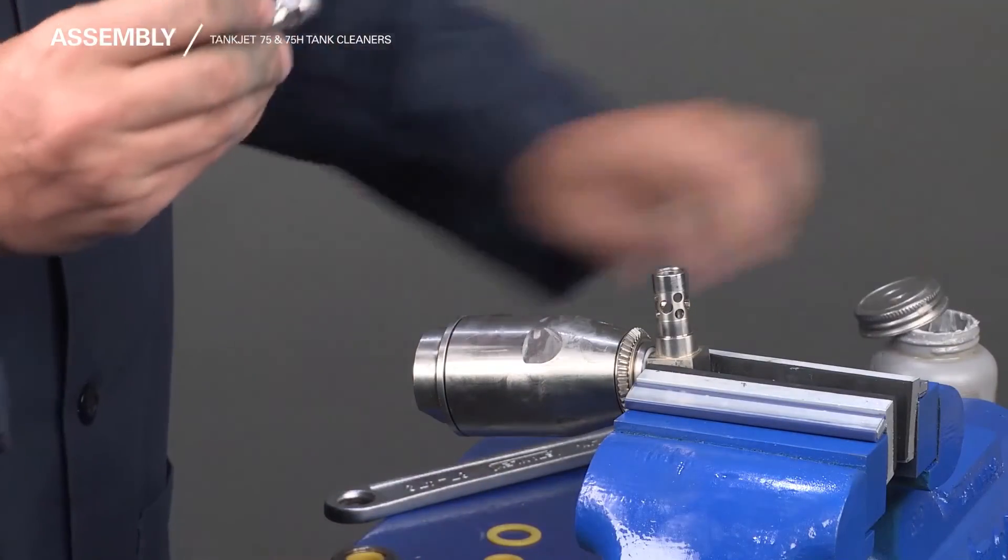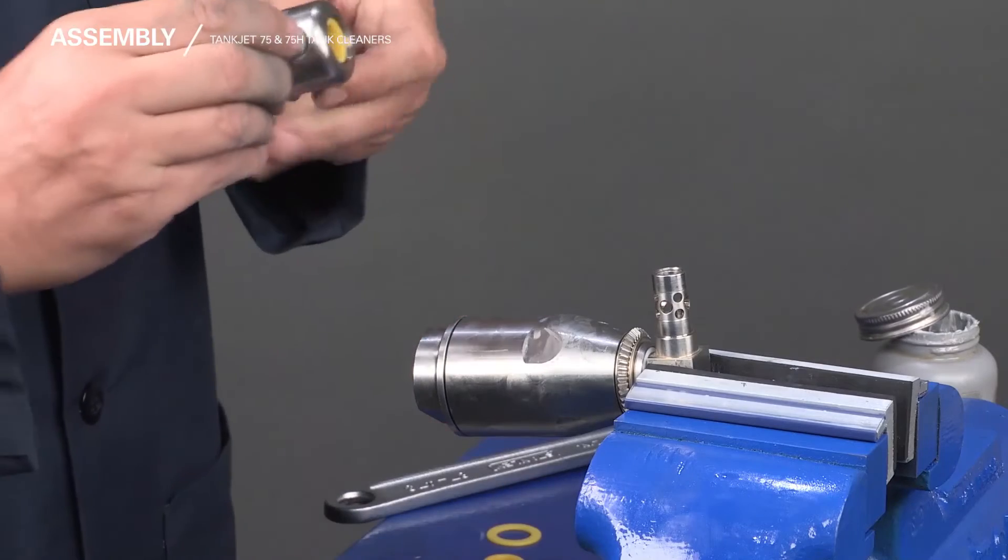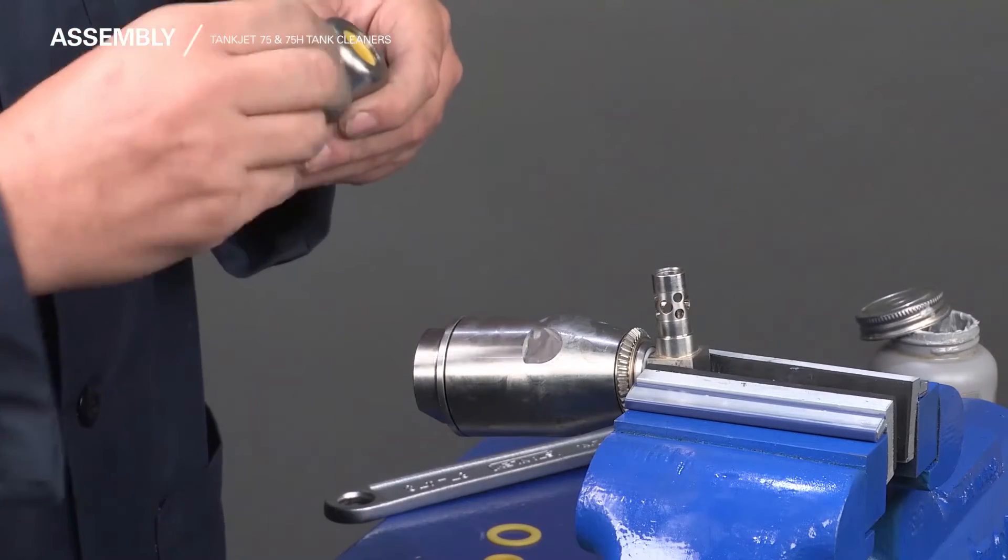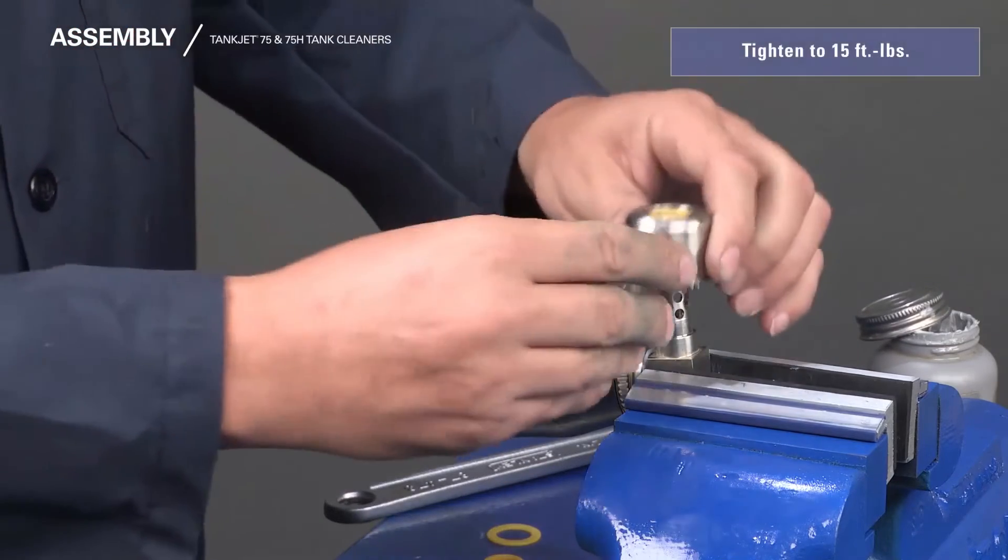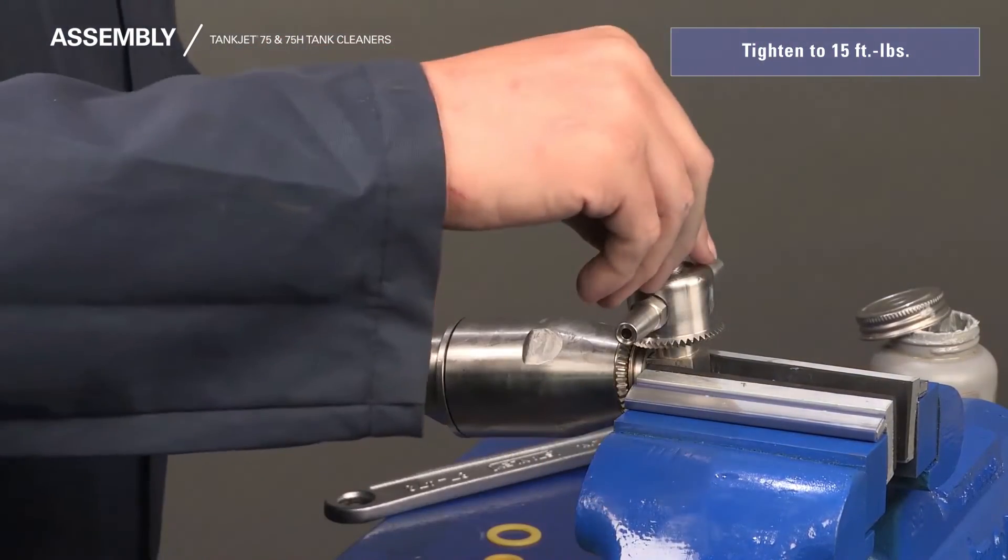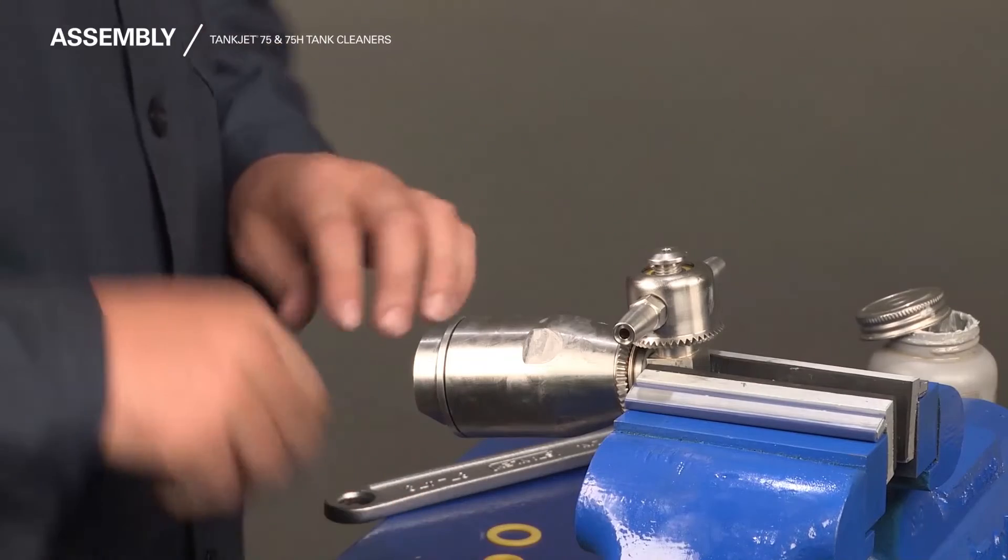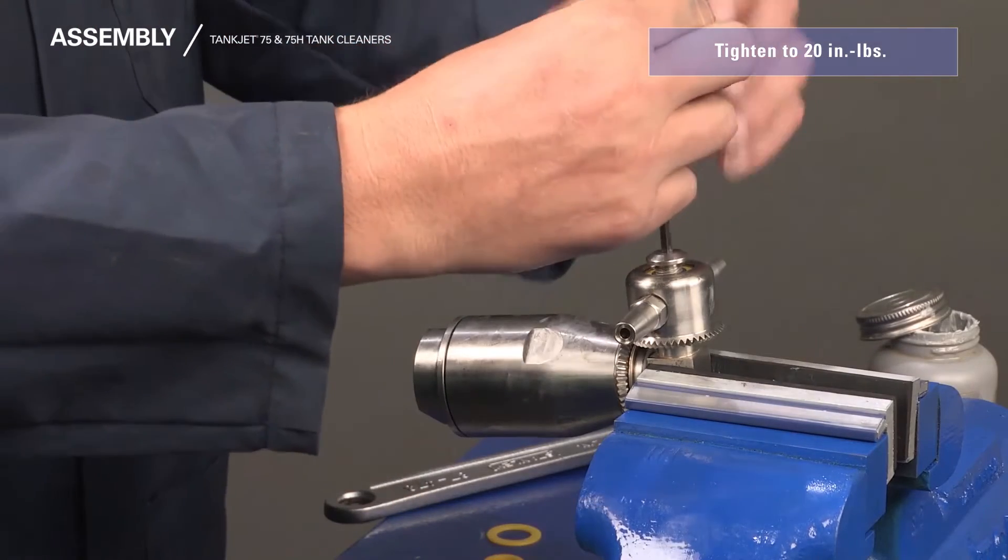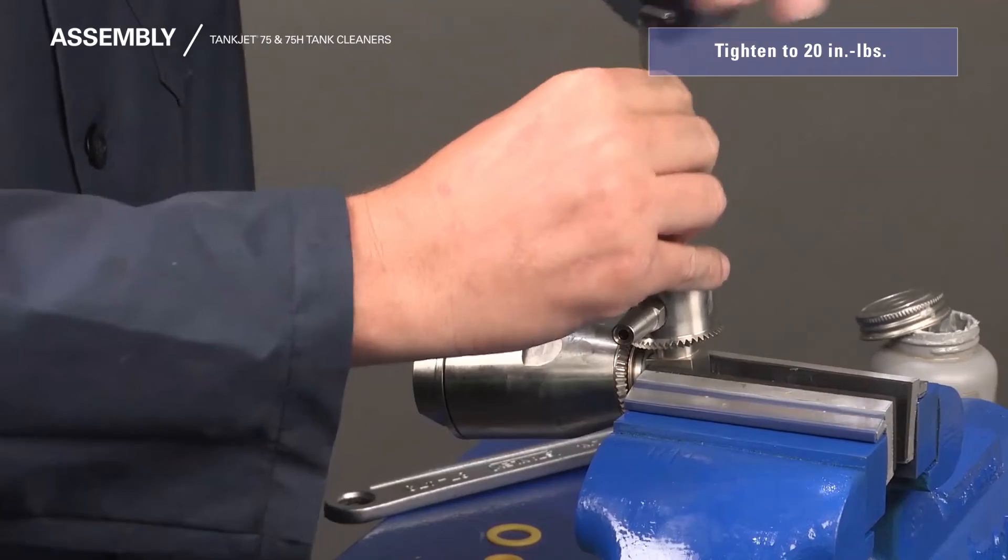Next, reposition the unit to clamp onto the elbow shaft square. Replace all of the nozzle assemblies applying anti-seize. Next, replace the shaft cap. Then, repeat this for the other side.